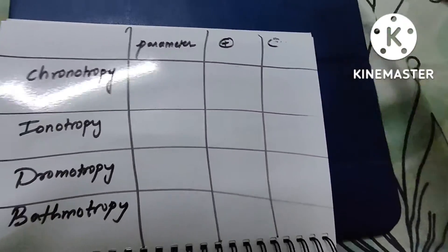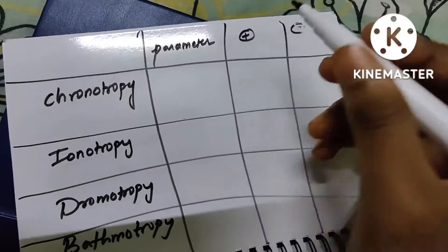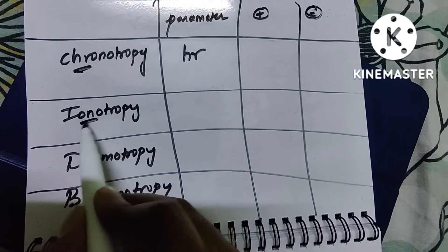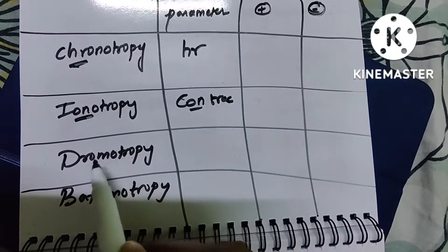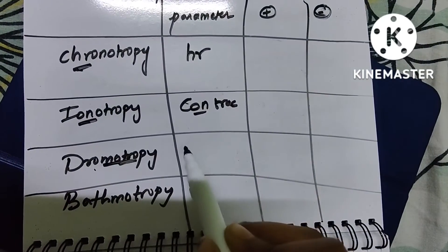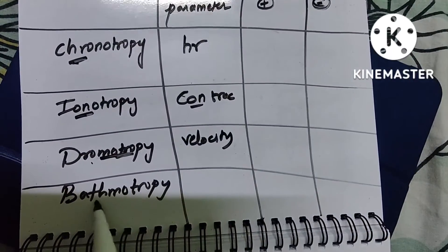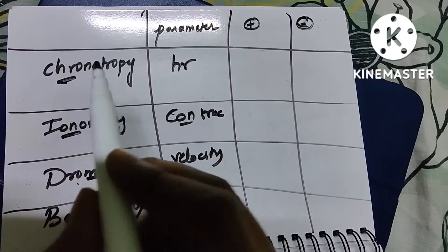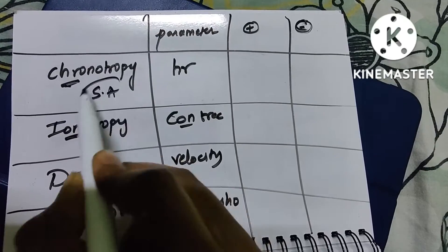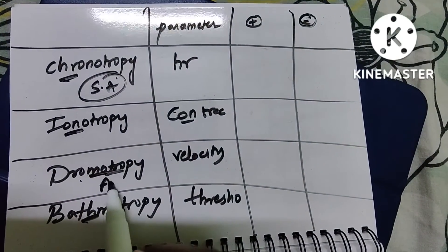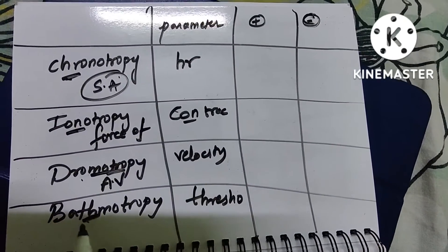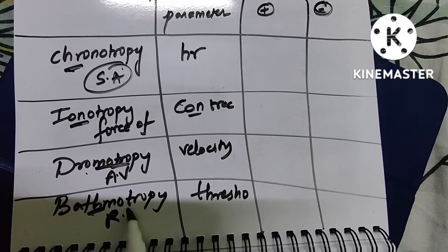Now I have an empty table here — try to fill it along with me so you remember this for longer. Chronotropy: the parameter is heart rate. Inotropy: 'ON,' meaning contraction. Dromotropy: impulse, that is velocity of the impulse. Bathmotropy: threshold. Chronotropic heart rate effects act on the SA node, whereas dromotropic effect is on the AV node.